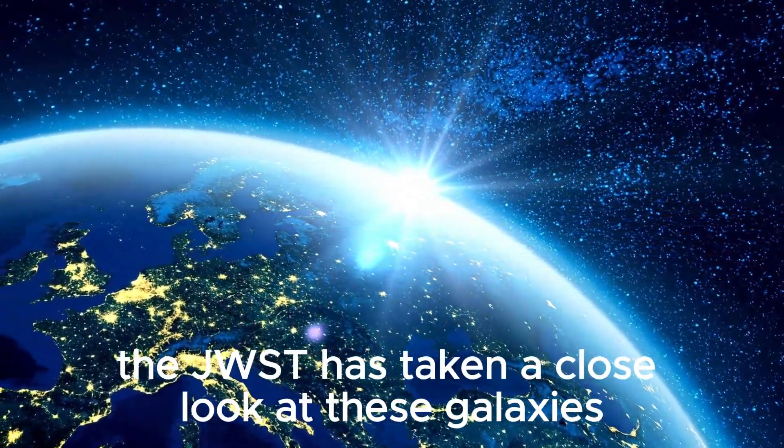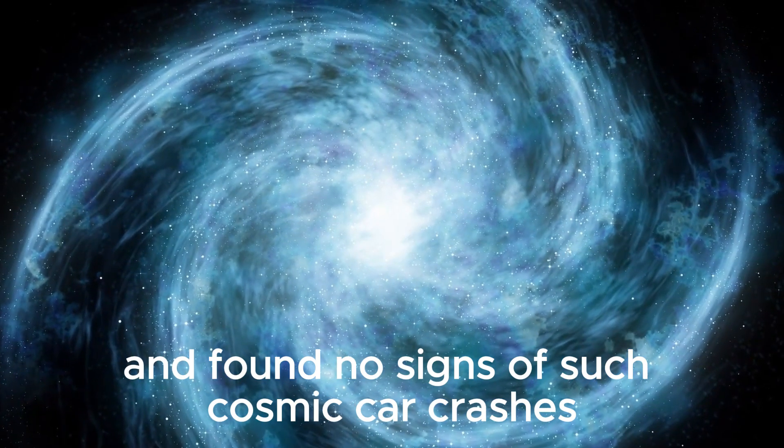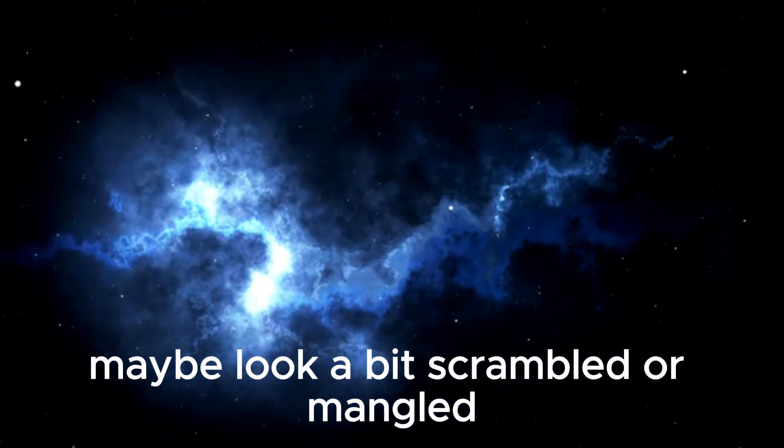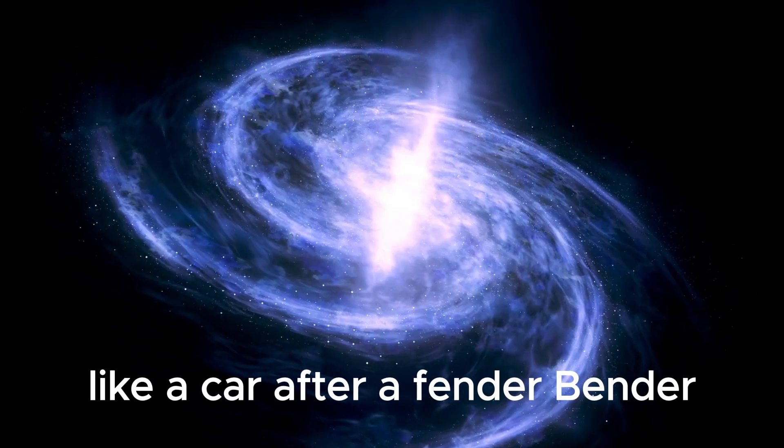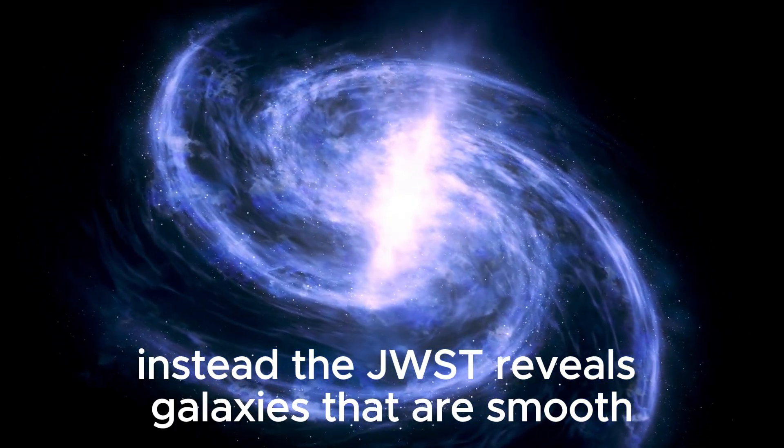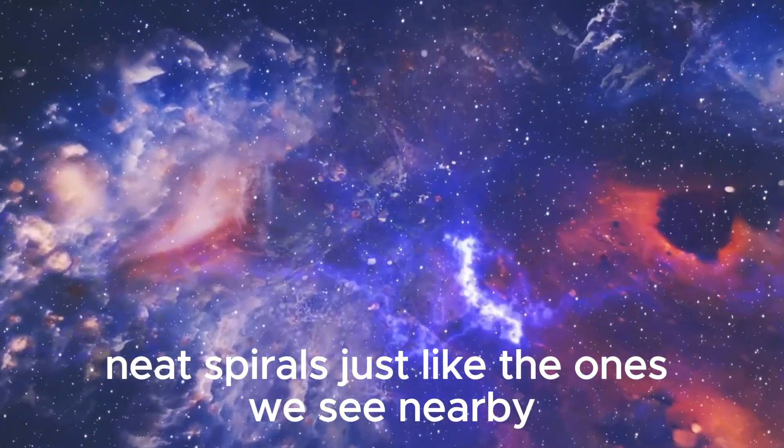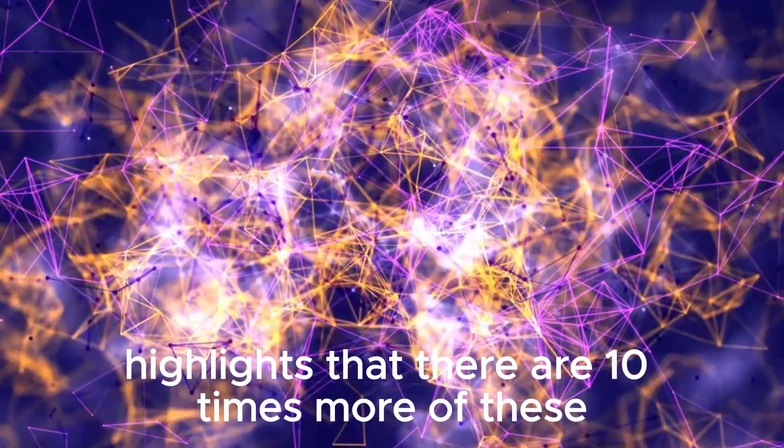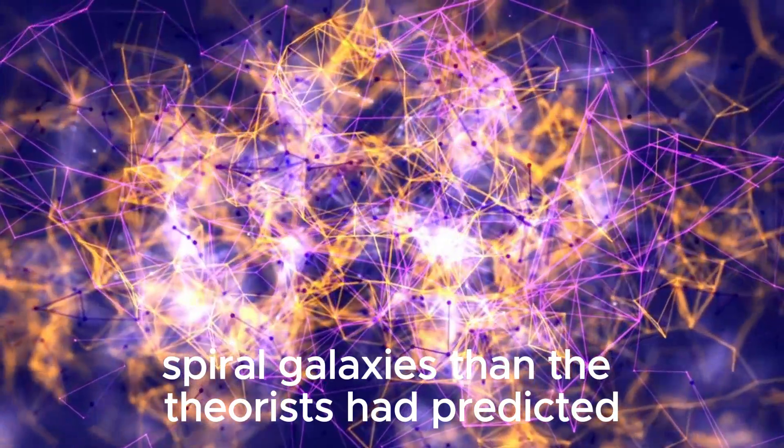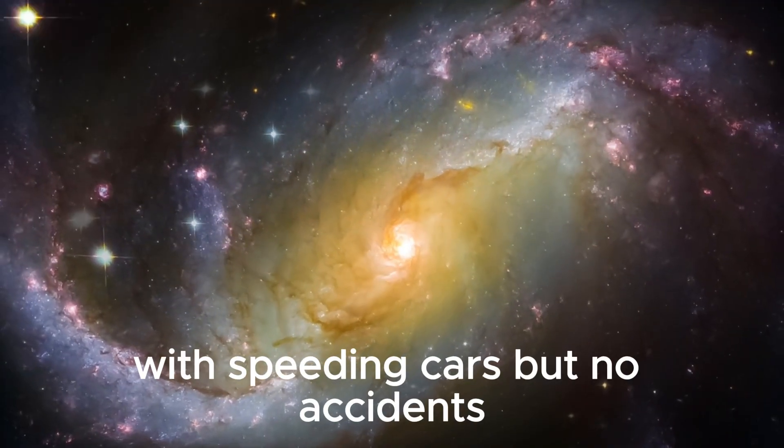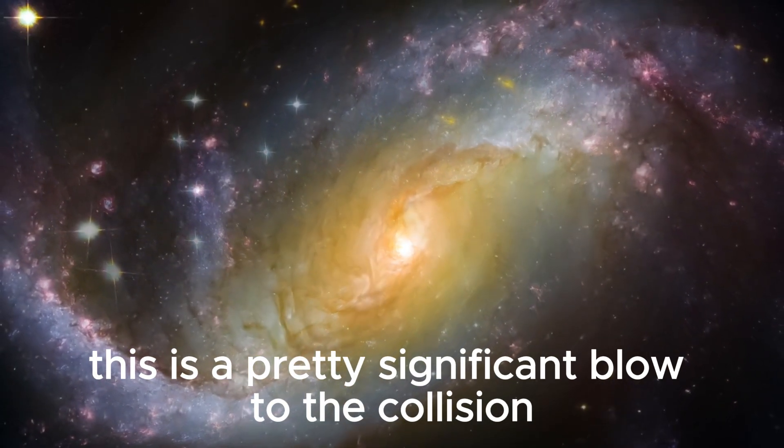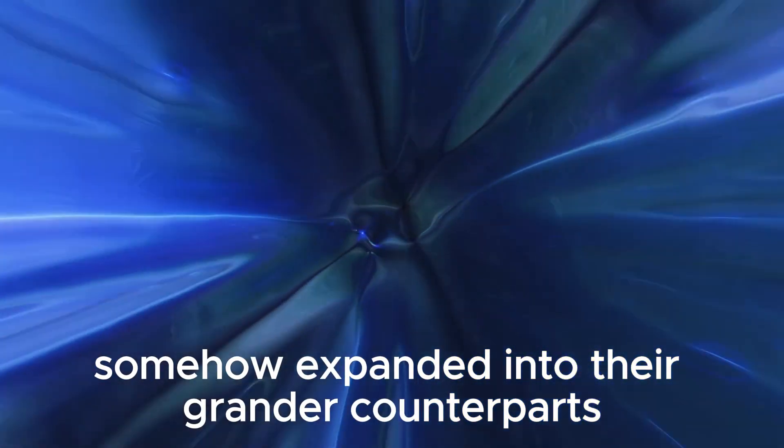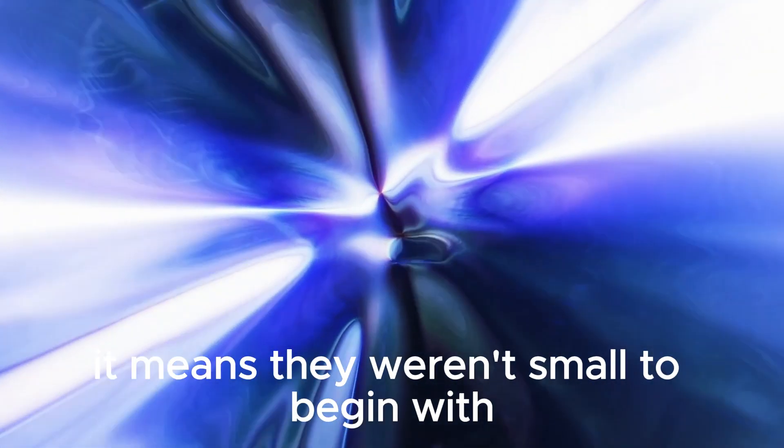But here's the twist. The JWST has taken a close look at these galaxies and found no signs of such cosmic car crashes. You would expect these colliding galaxies to show some signs of damage, maybe look a bit scrambled or mangled. But that's not what we see. Instead, the JWST reveals galaxies that are smooth, neat spirals, just like the ones we see nearby. There's an overwhelming lack of galactic fender dents. This is a pretty significant blow to the collision theory.